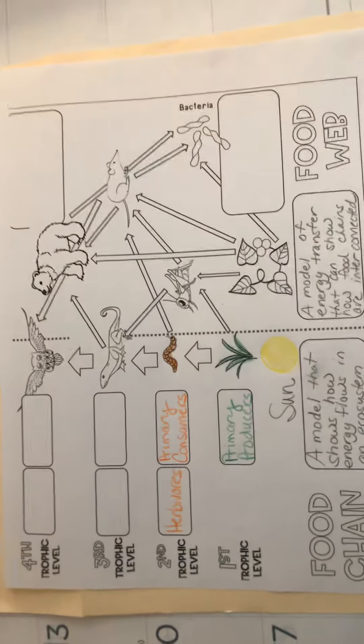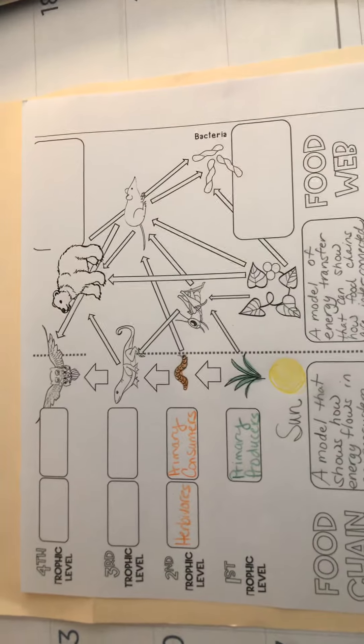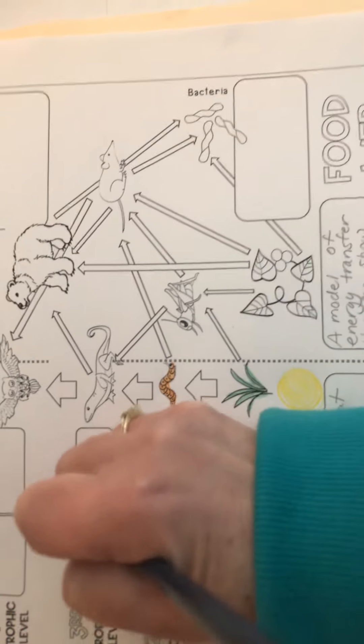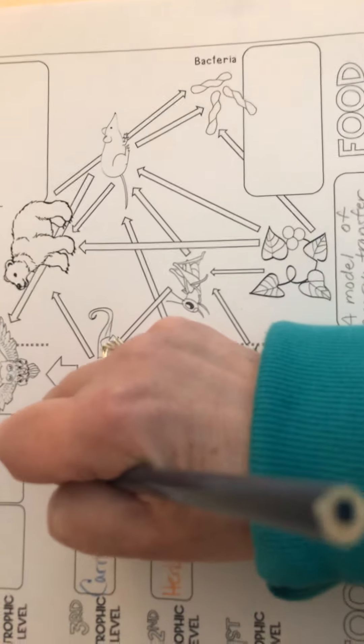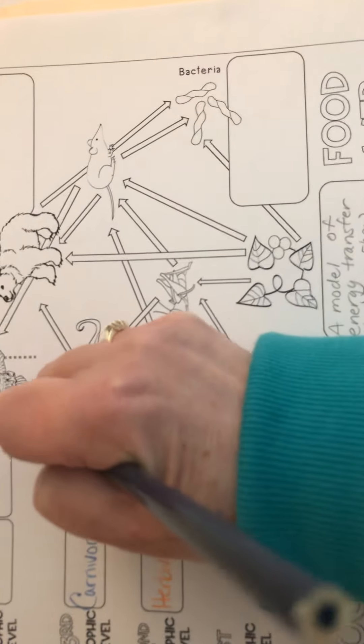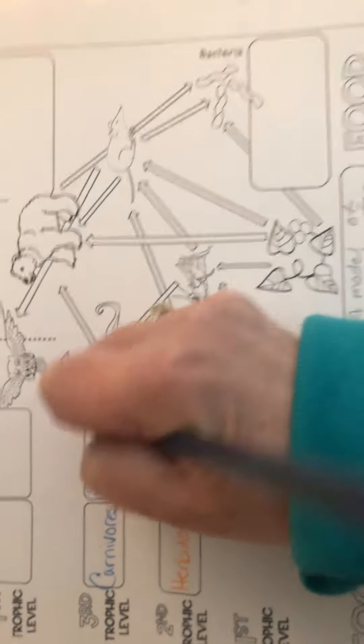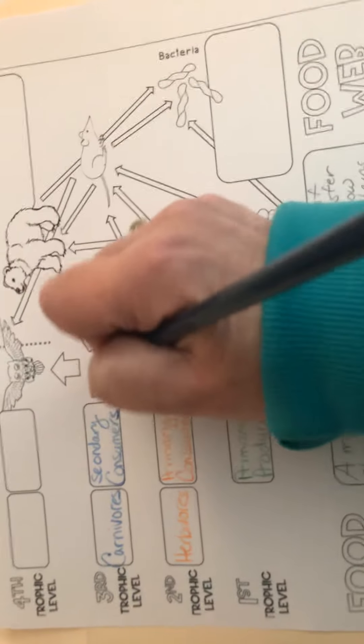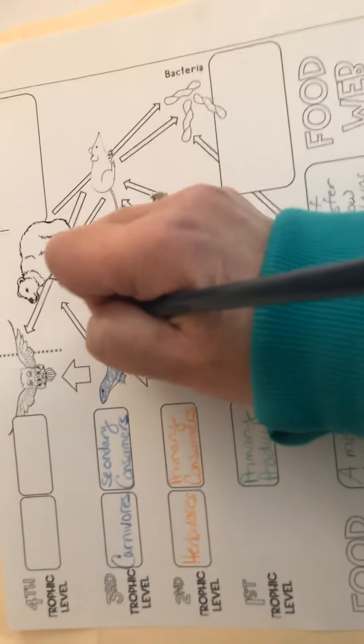If we keep moving up to the third trophic level, then we have things like carnivores, so things that eat meat, and they're called secondary consumers here. Things that would eat maybe a caterpillar or things like that are going to fit in